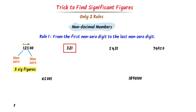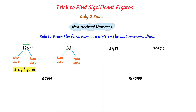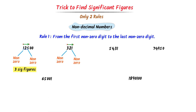In case of the second number, I go from the first non-zero digit to the last non-zero digit. The first non-zero digit is 3 and the last non-zero digit is 1. So I go from 3 to 1. We can see that there are 3 digits from first non-zero digit to the last non-zero digit, so there are 3 significant figures in this number.